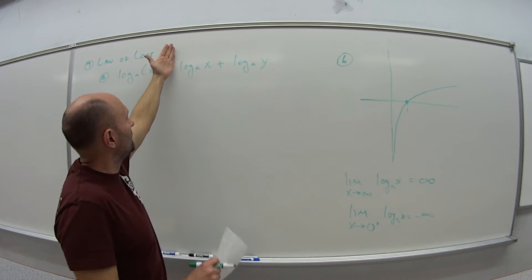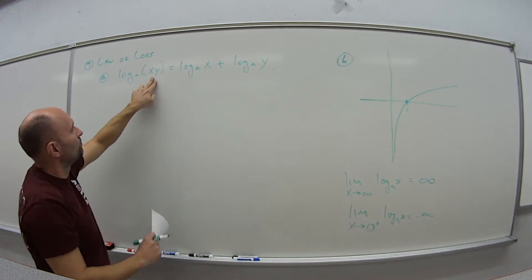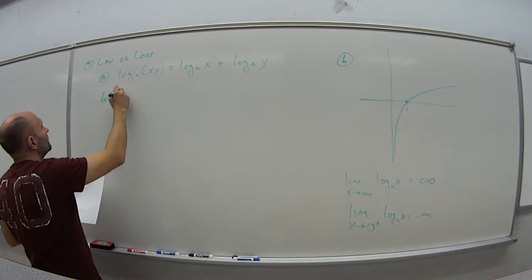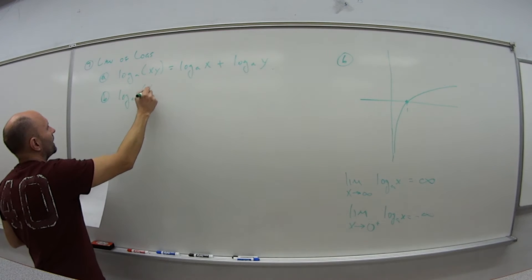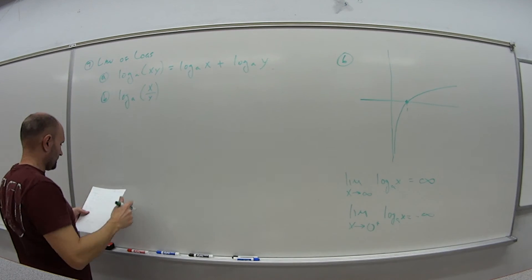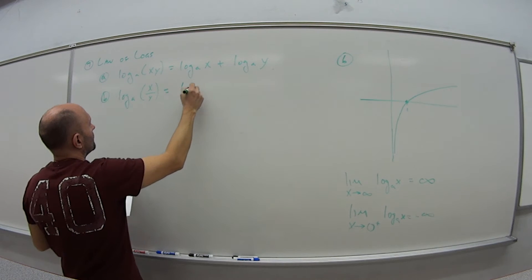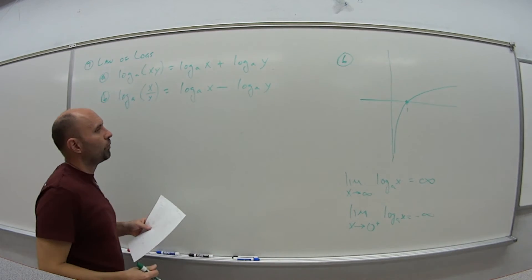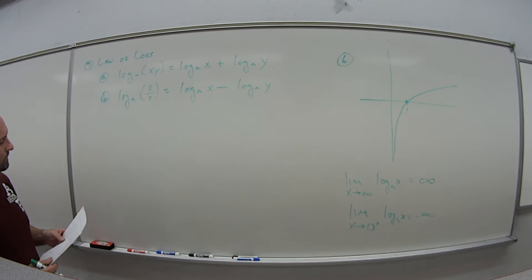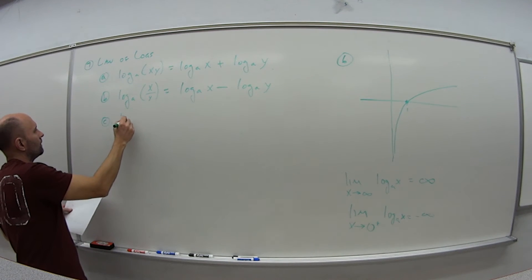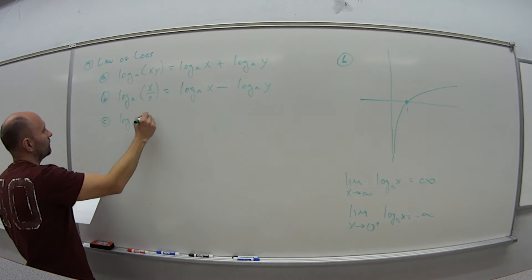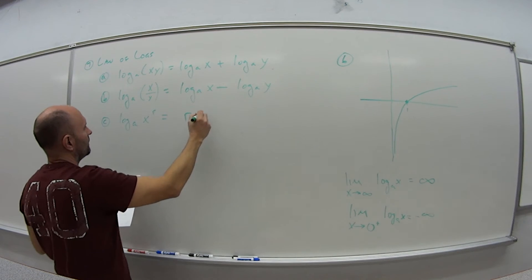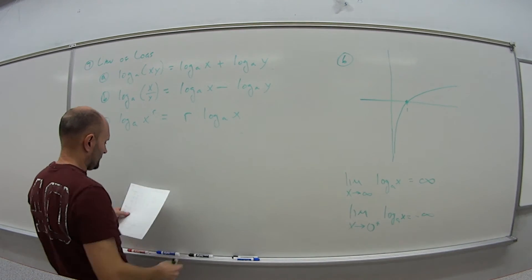B says that log base A of X divided by Y is equal to log base A of X minus log base A of Y. And then C, log base A of X to the R power is the same as bringing that exponent down in front, R times log base A of X.